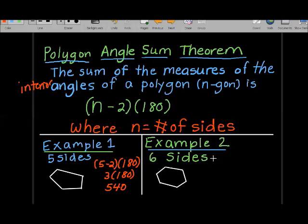Let's try 6 sides. We're going to take 6 minus 2 and multiply it by 180, that's 4 times 180, which gives us 720. To find a missing angle, I need to have 5 of them, and I could add up all 5 and subtract them from 720.